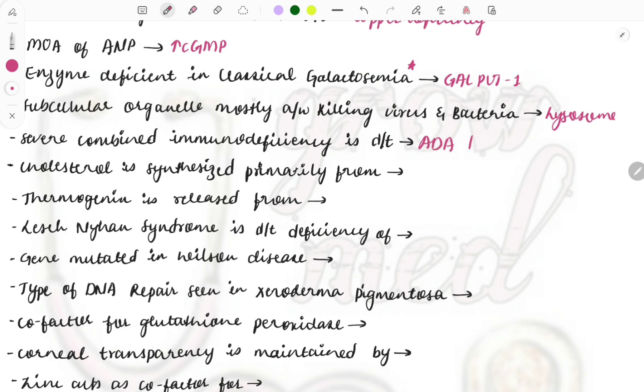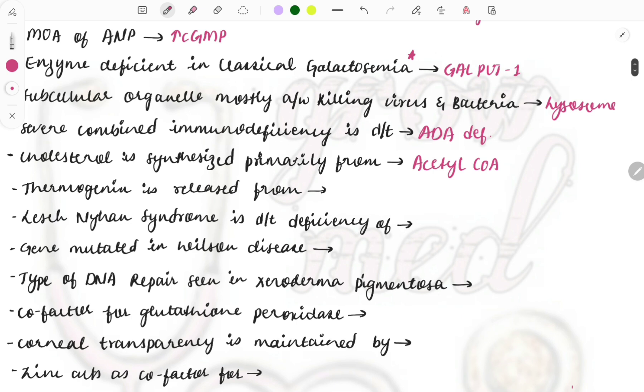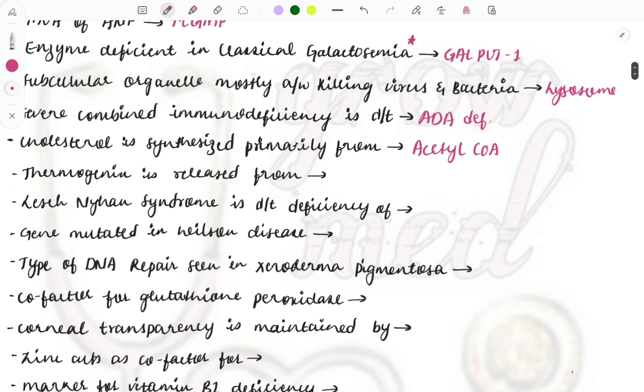Severe combined immunodeficiency occurs due to deficiency of which enzyme? It is ADA deficiency. Deficiency of this enzyme will be causing severe combined immunodeficiency. Cholesterol is synthesized primarily from acetyl CoA. Acetyl coenzyme A will break down to give cholesterol. Thermogenin is released from which organelle? It is the mitochondria.